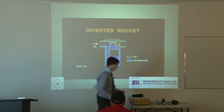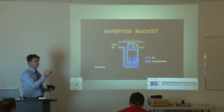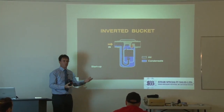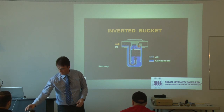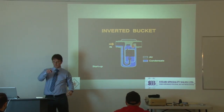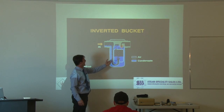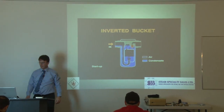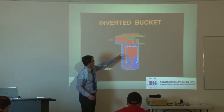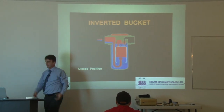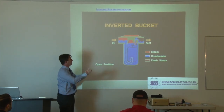Inverted bucket traps don't modulate like a float trap — they're more on-off, like a solenoid valve or ball valve that opens and closes. The orifice is the bolt on top. When air and steam get inside, the bucket becomes buoyant and rises, which closes the trap. When steam starts to escape through the small hole at the top of the bucket and condenses, the weight of the bucket overcomes whatever steam is left inside and it drops down.